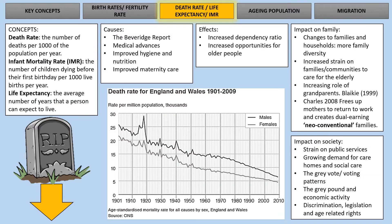Next, we have death rates. Death rate is broken down into a number of areas. Death rate is the number of deaths per thousand of the population. Infant mortality rate is the number of children who die before their first birthday. And life expectancy is the average length of a person's life, as you may have guessed by the name.